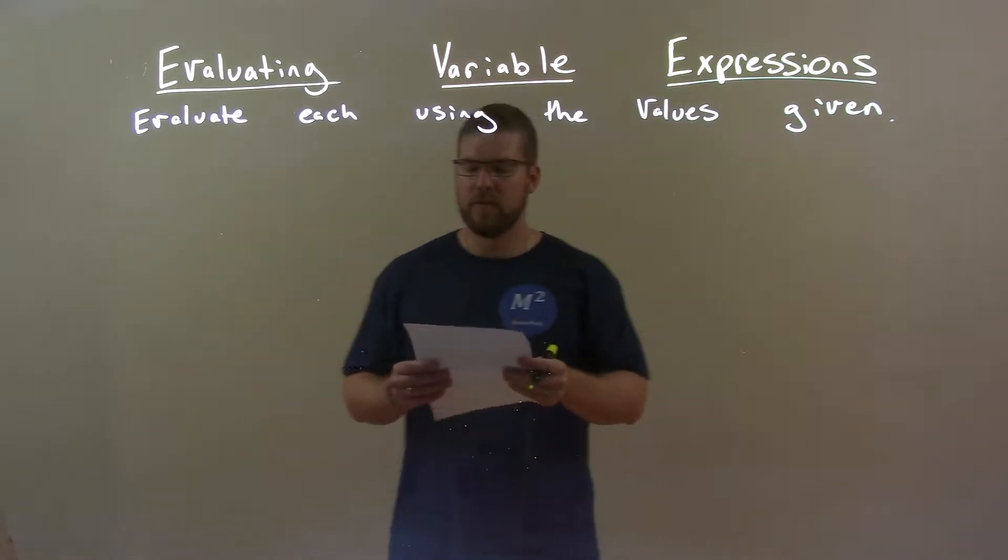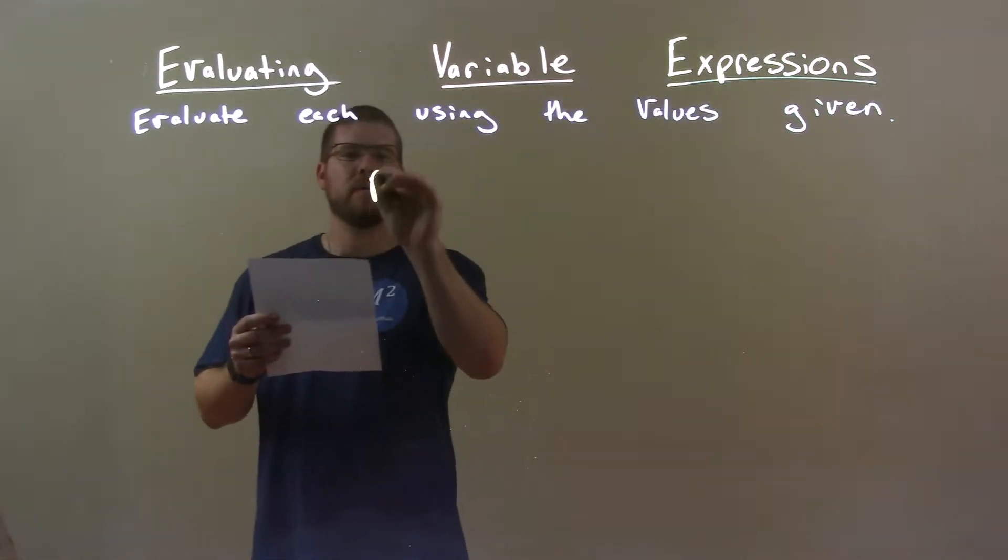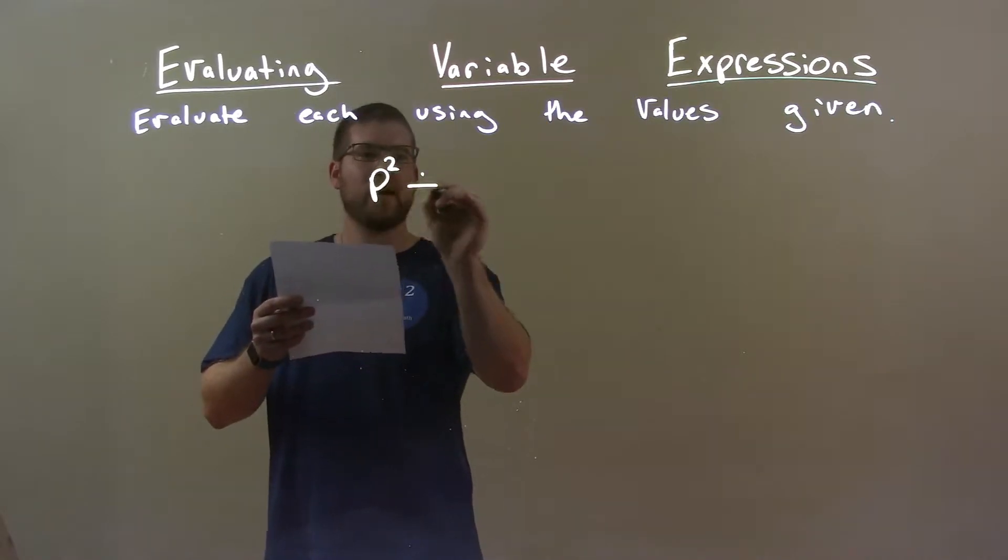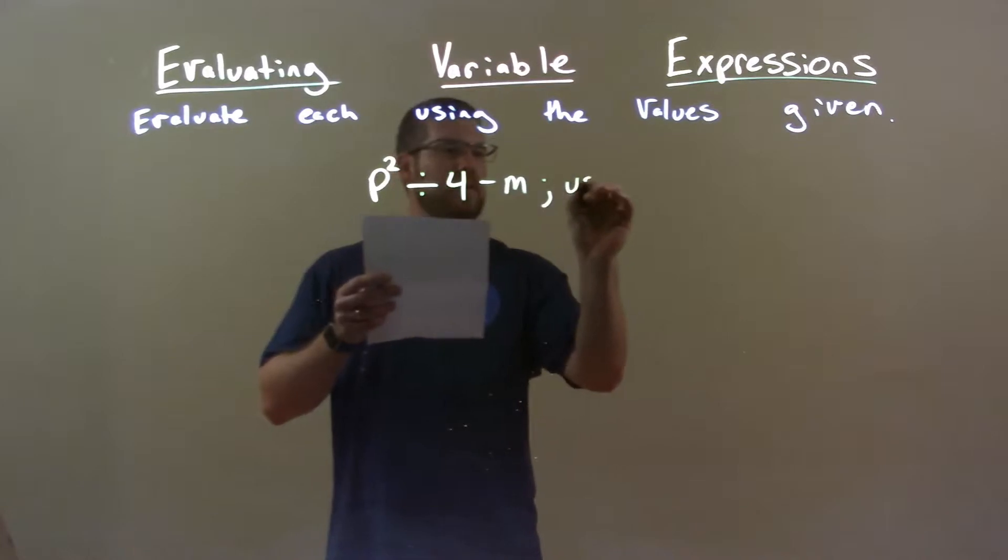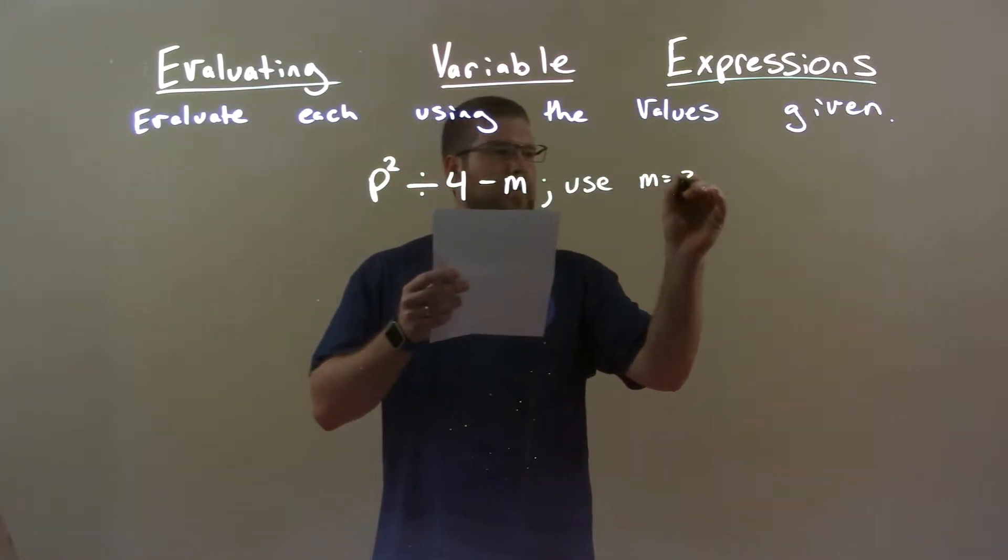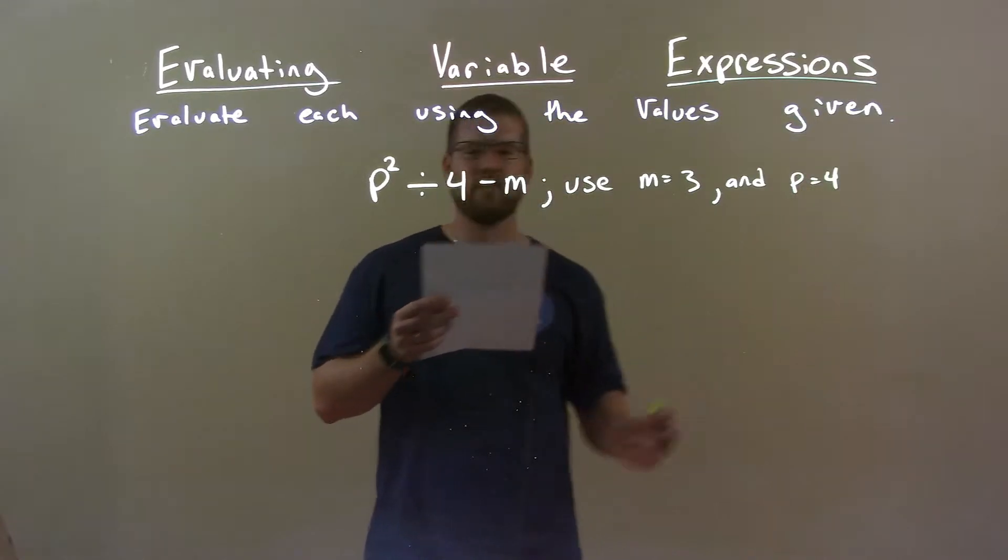So, if I was given this expression p squared divided by 4 minus m, I'm going to use m to be 3 and p to equal 4, okay?